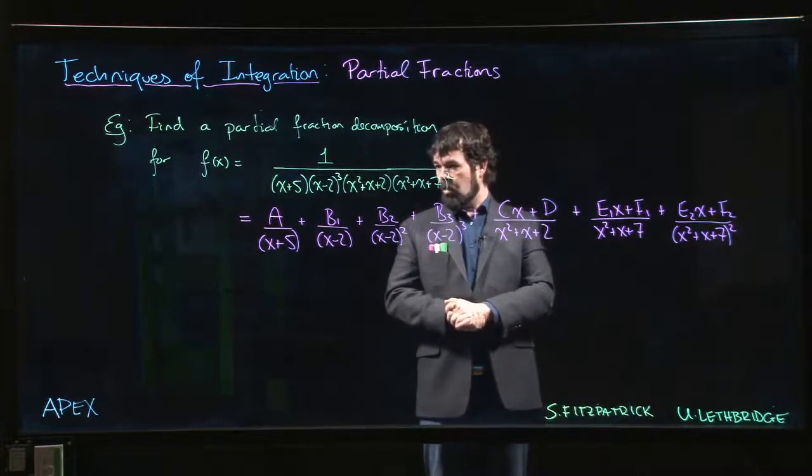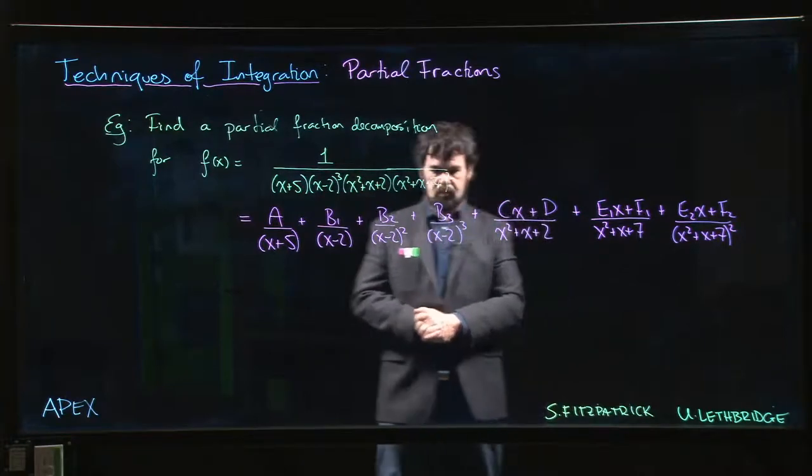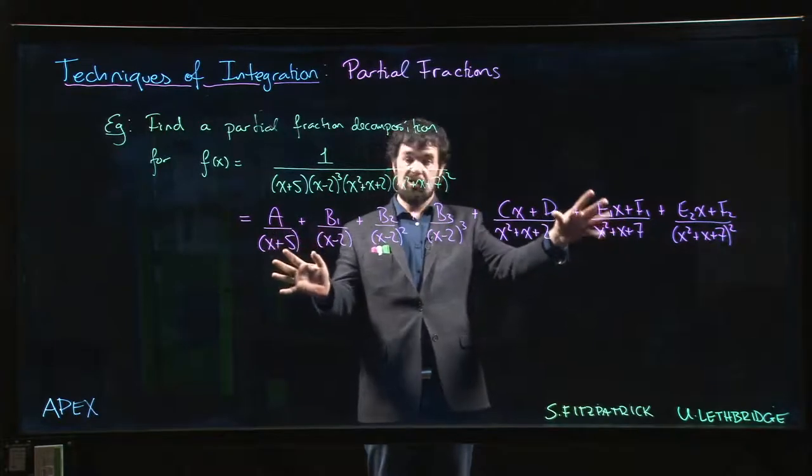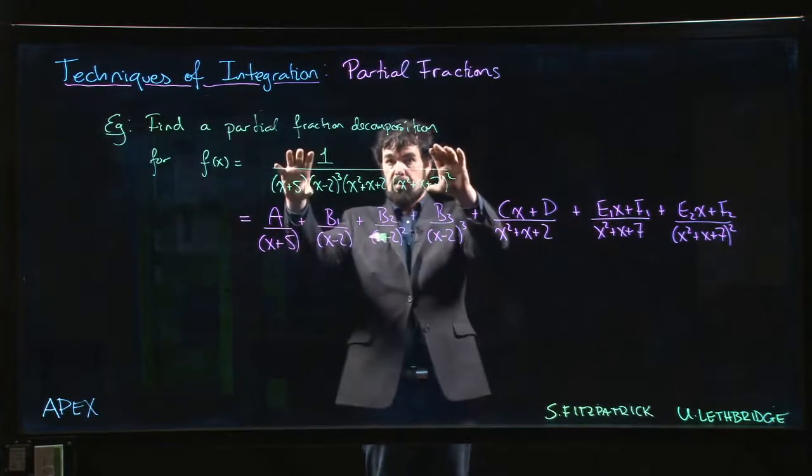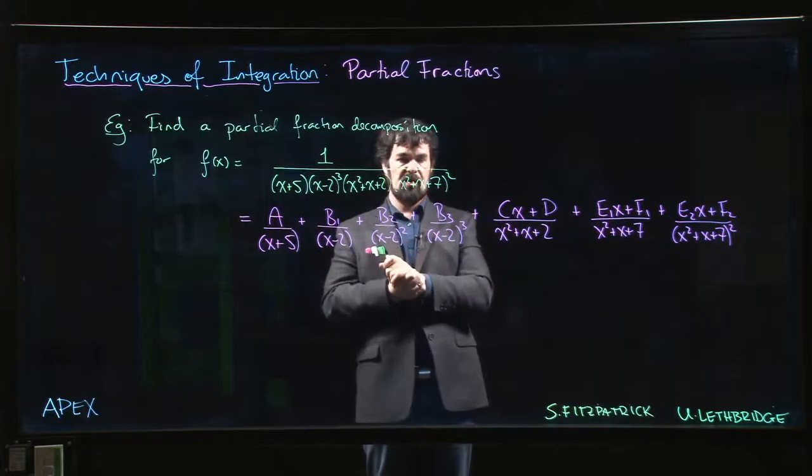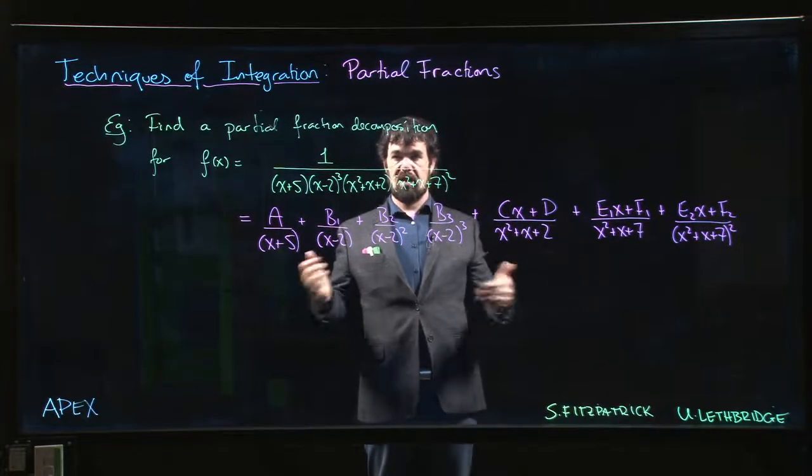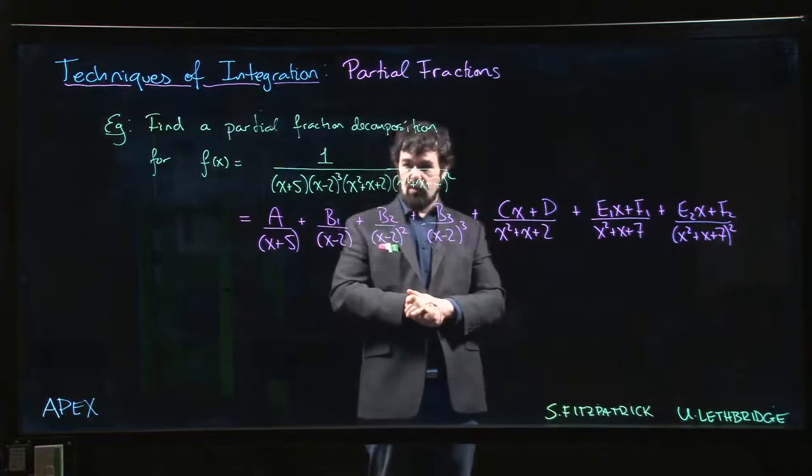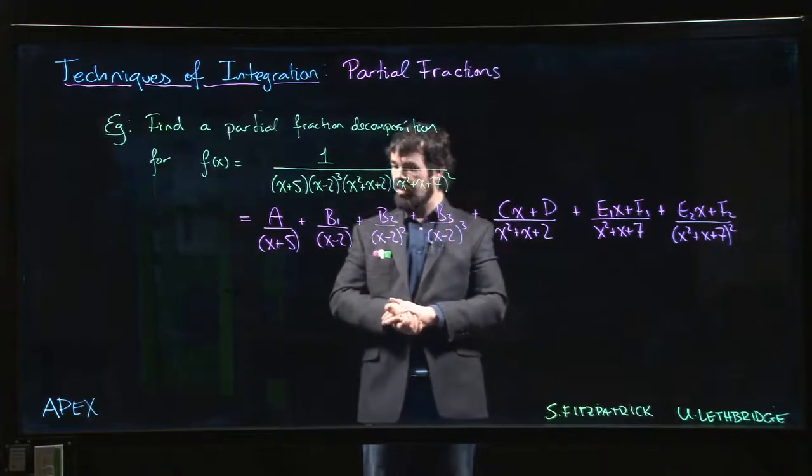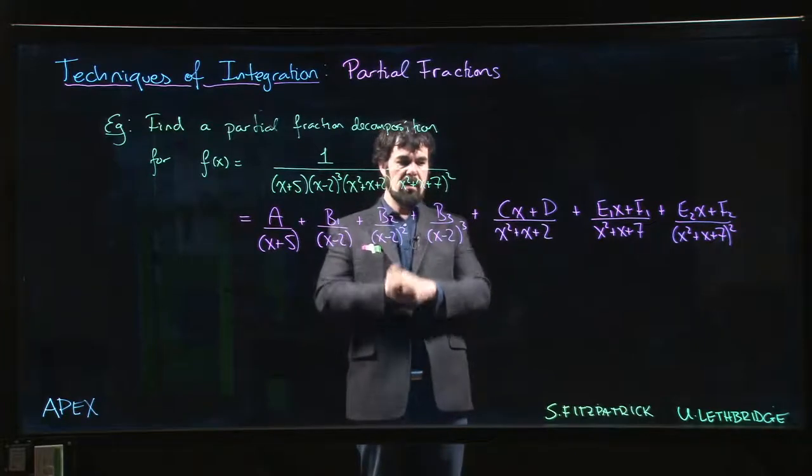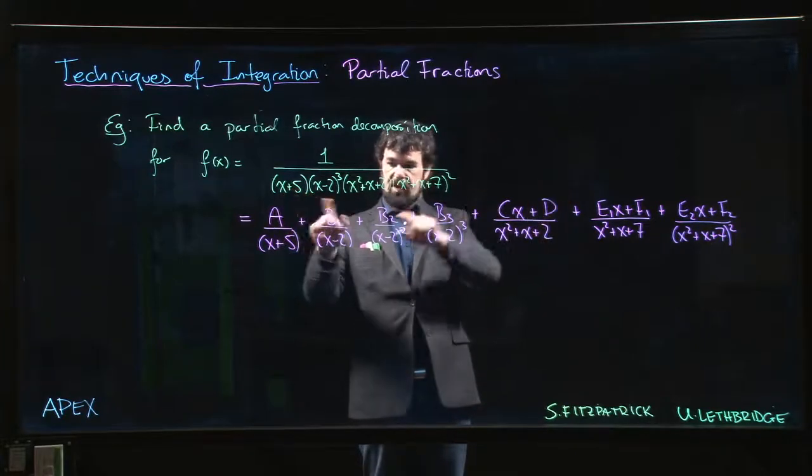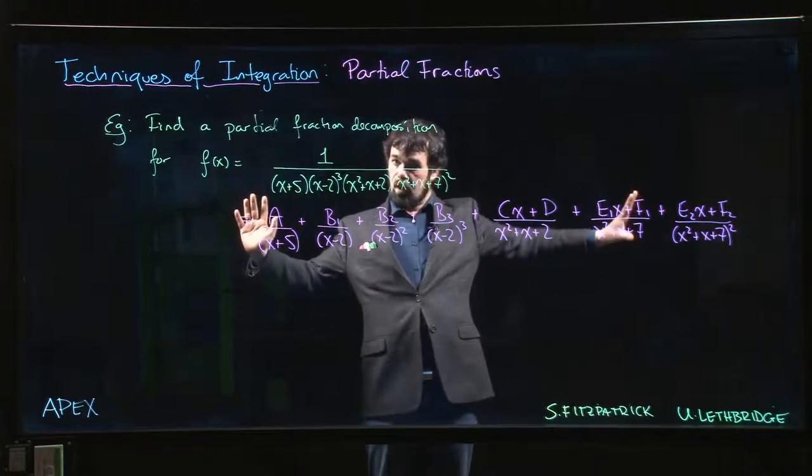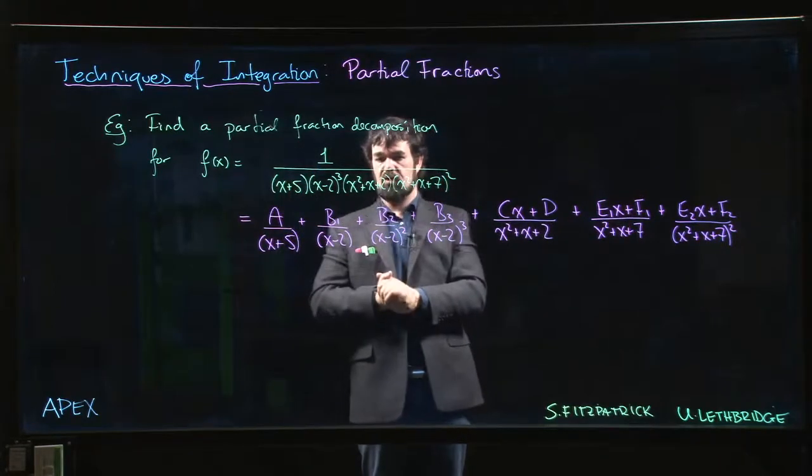The way you can essentially solve for all these constants is by taking this expression and getting a common denominator. Because we get the common denominator, then we're back to here—we can make a comparison. If the denominators are the same, so must be the numerators. One systematic way to do this is to get your common denominator, take the resulting numerator involving all these coefficients, multiply everything out, get a big huge polynomial, and equate coefficients to what you have over here.